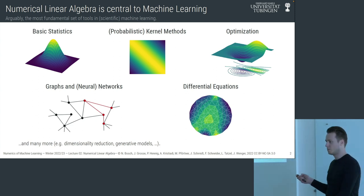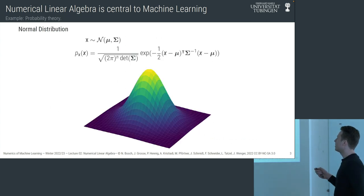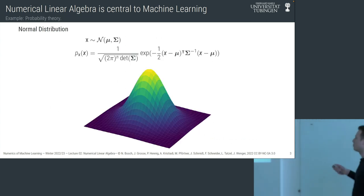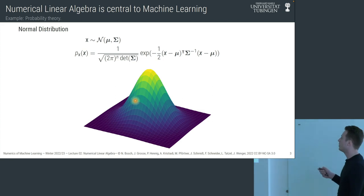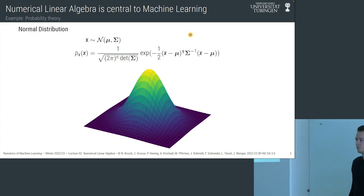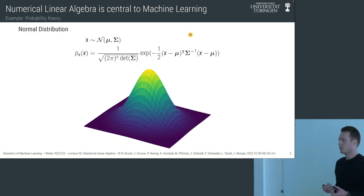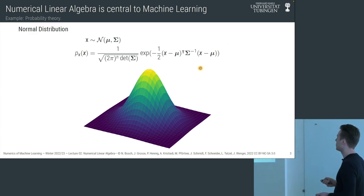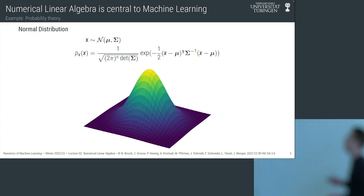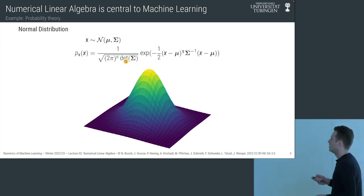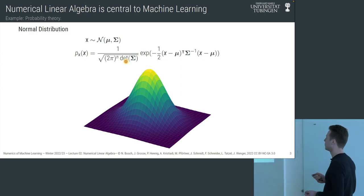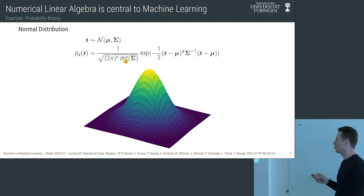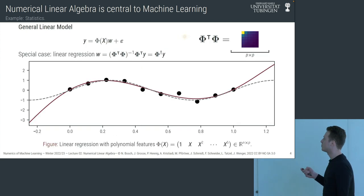Starting with basic probability theory: in the probability density function of a multivariate normal distribution, we already see two important parts of today's lecture — the inverse of the covariance matrix and the determinant. These are the two concepts we'll cover most today.